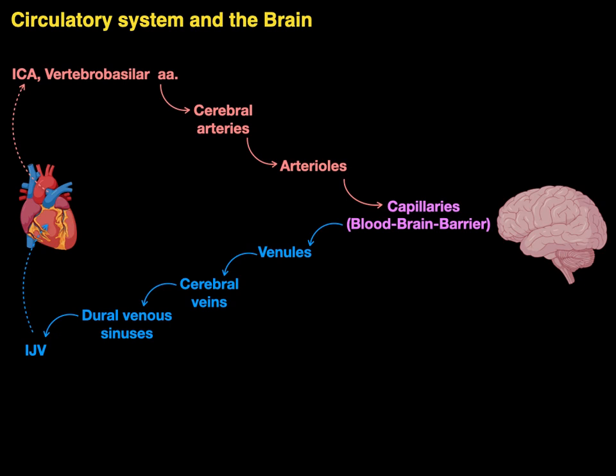The two things that are very unique at this point are the blood-brain barrier — very controlled capillary beds — and the dural venous sinuses, which are the separation in the two layers of the dura. These sinuses are lined with endothelial cells but they lack valves.